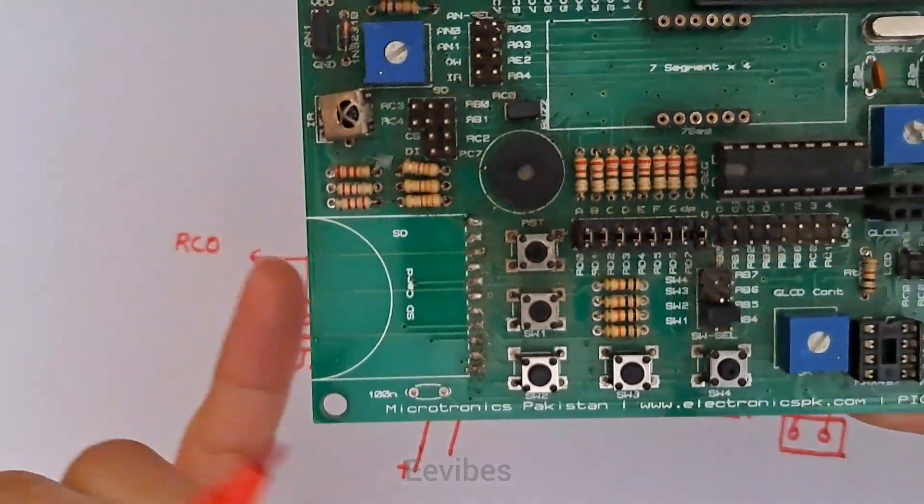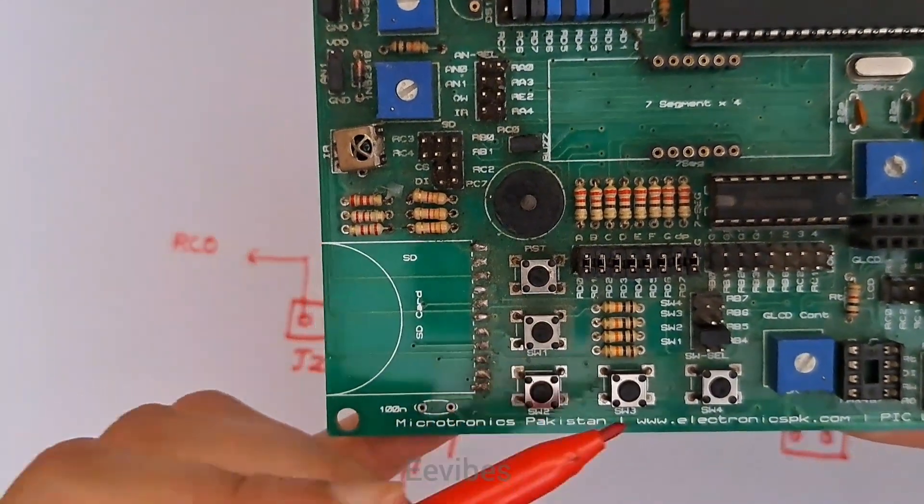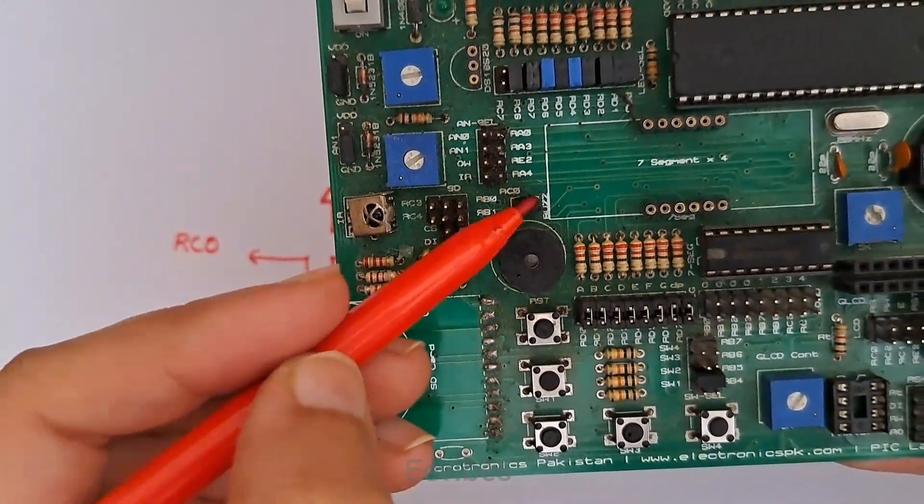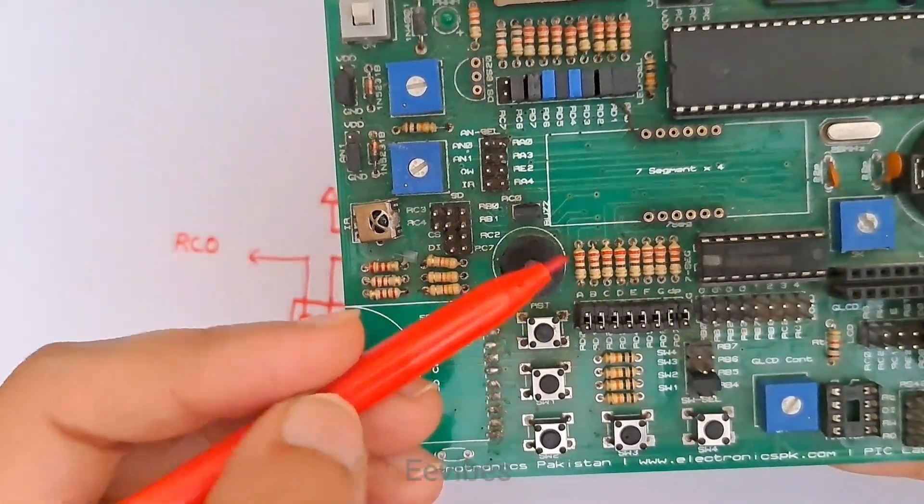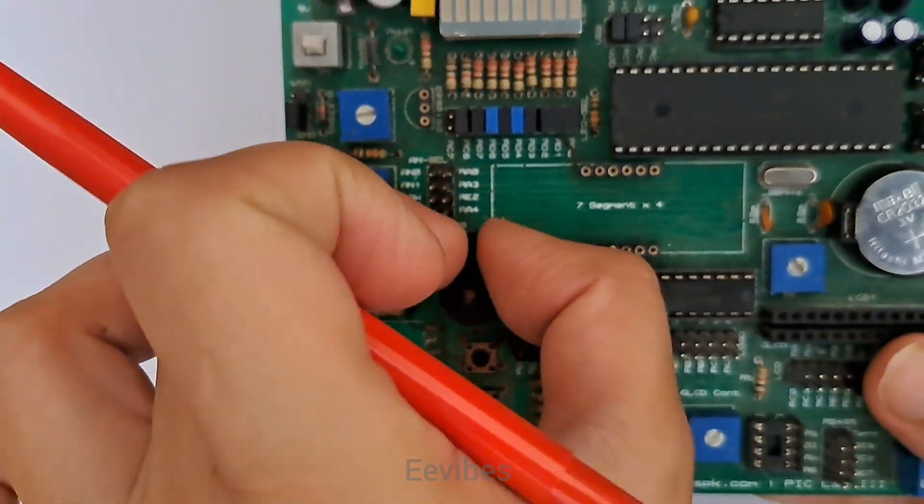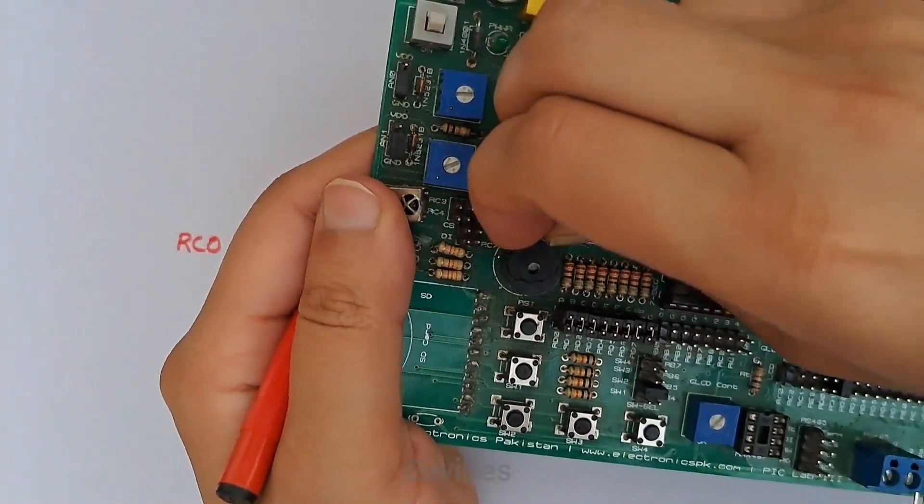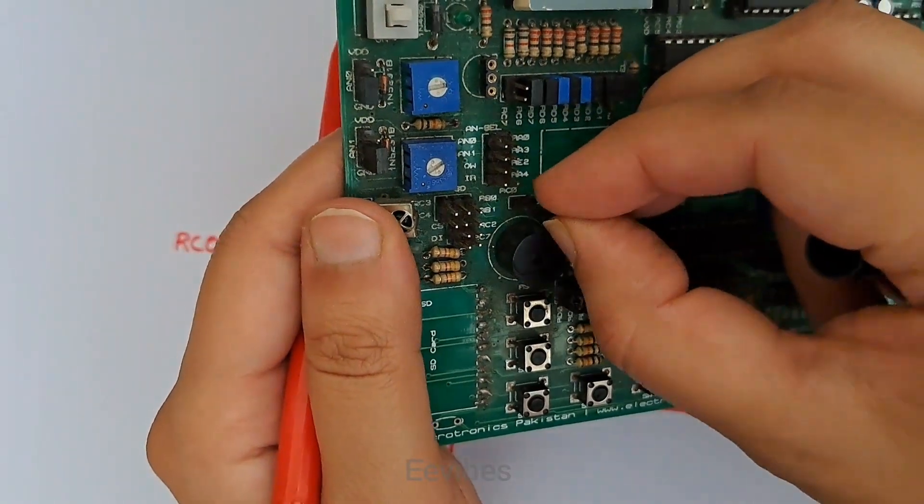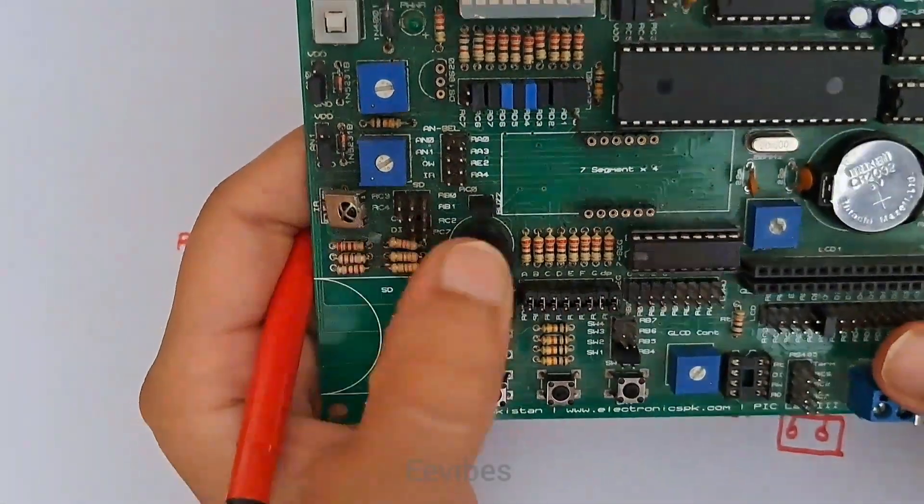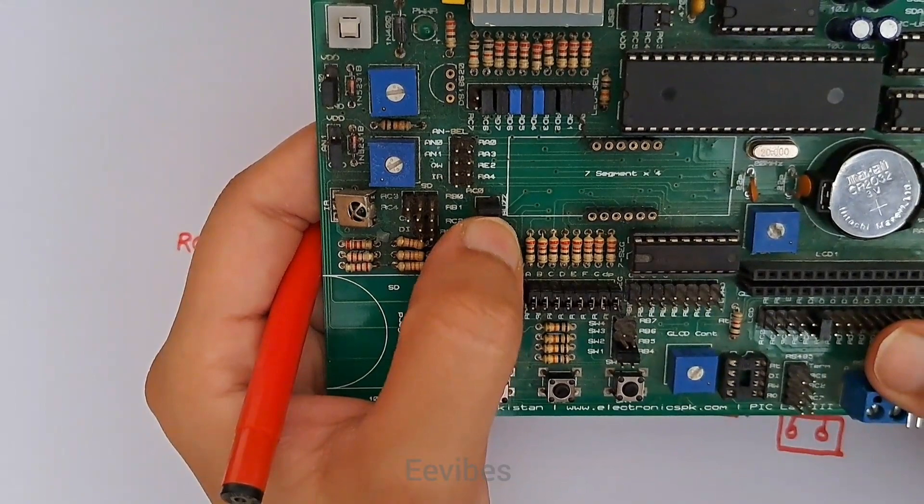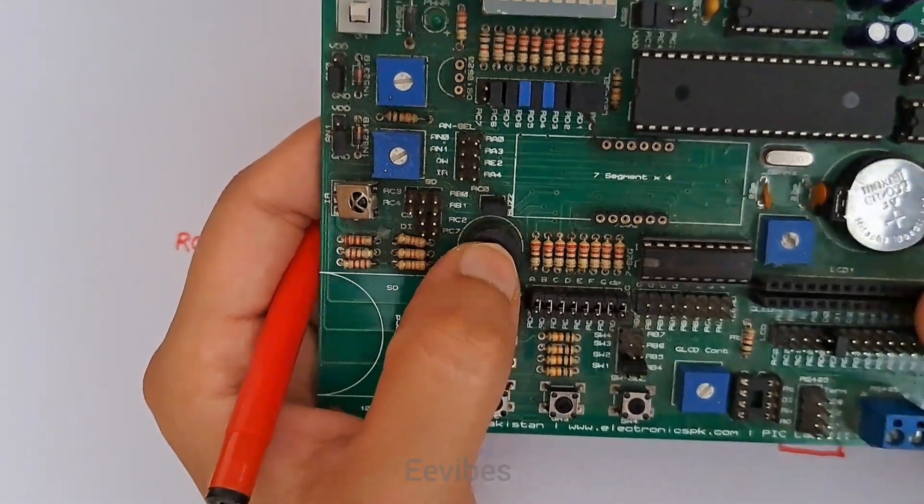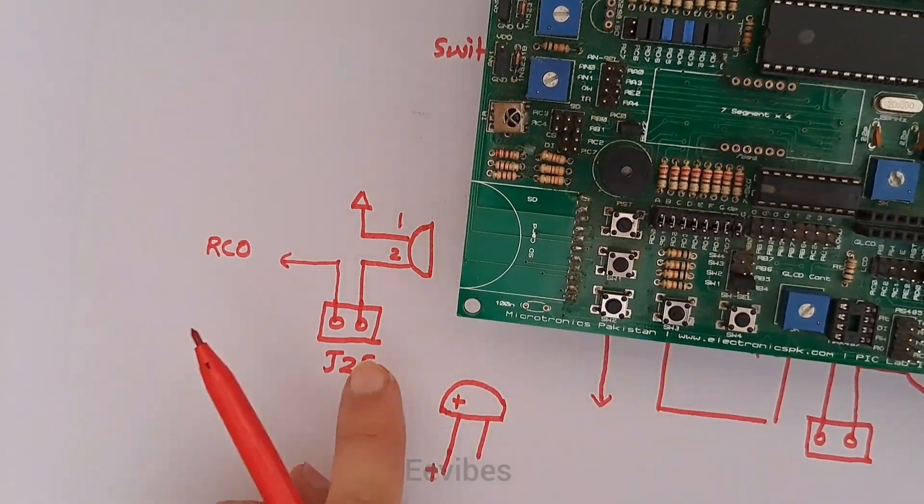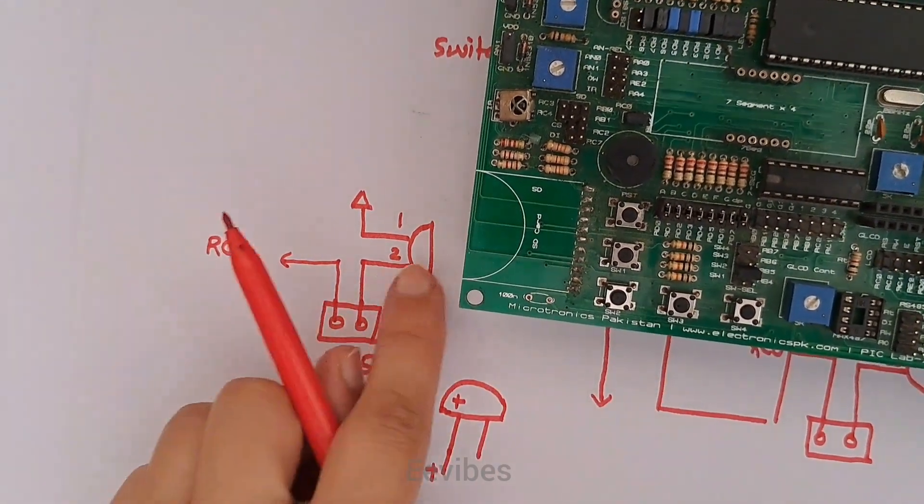This buzzer will be connected to the board when I connect this junction with the pins, so I need to close this junction in order to complete the circuitry, just like it is shown over here. So this J25 on the board is actually a junction that will connect the buzzer with the 0th pin of RC or port C.